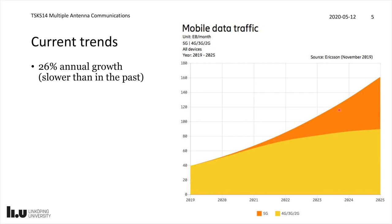We will go from 40 up to 160 exabyte per month in about 5 to 6 years. According to Cooper's Law, we would have done it in 5 years. So now we have a slightly weaker growth rate, but it's still 26%. We still have very rapid growth in mobile data traffic, and the 4G networks we have today wouldn't be able to deliver all of this growth — that's why we need a new technology such as 5G.